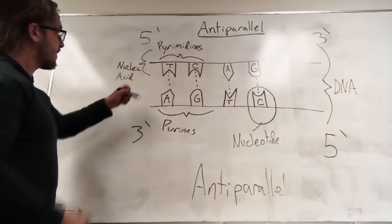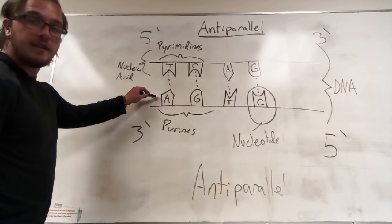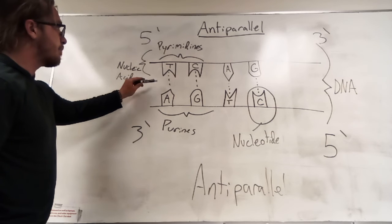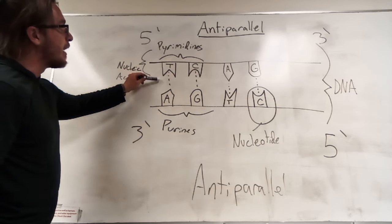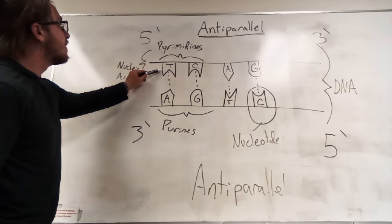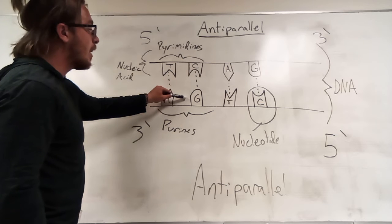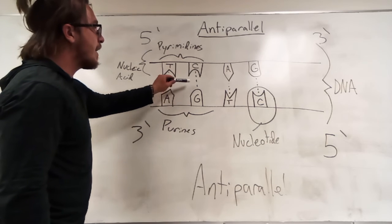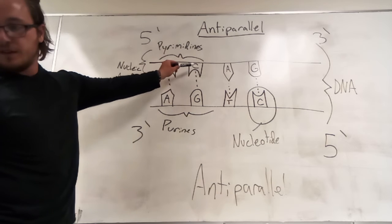As we can see here, adenine listed as A is bonded through a hydrogen bond to thymine. Here we have guanine listed as G going through a hydrogen bond to cytosine.